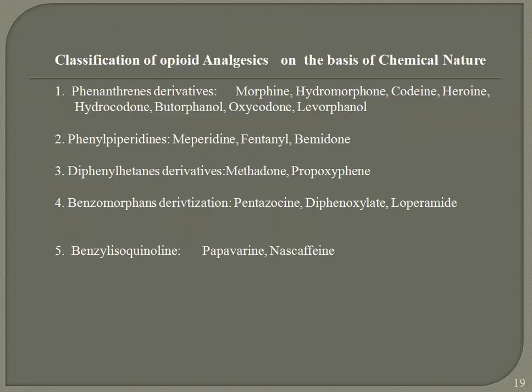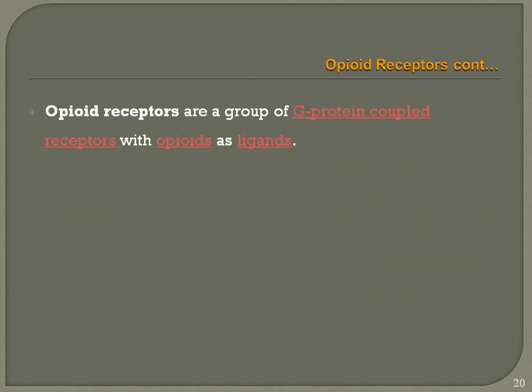The chemical classification of opioid analgesics includes: phenanthrene derivatives (morphine, codeine, heroin, hydrocodone, oxycodone); phenylpiperidine derivatives (meperidine, fentanyl); phenyldiphenylheptane derivatives (methadone, propoxyphene); benzomorphan derivatives (pentazocine, diphenoxylate, loperamide); and benzyl isoquinolines (papaverine, noscapine).